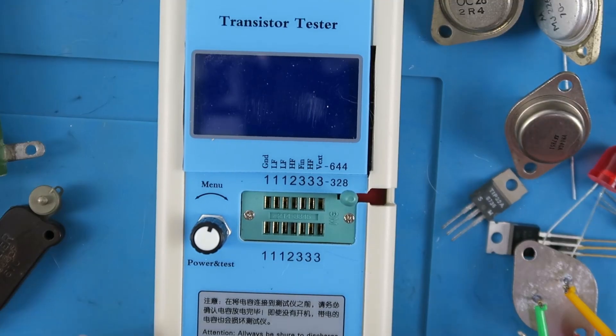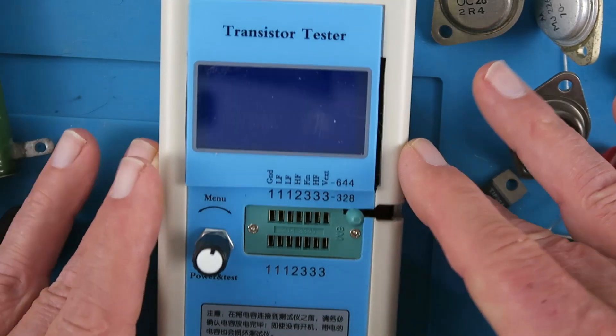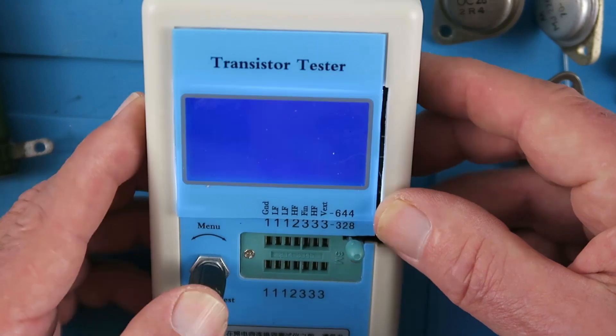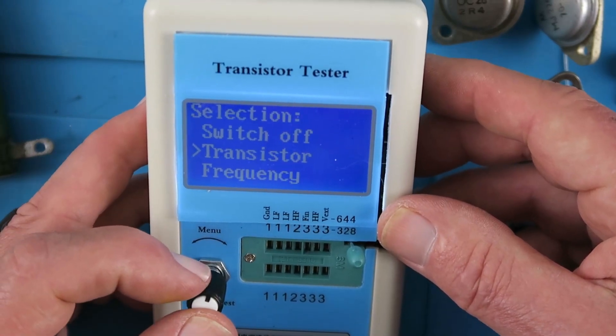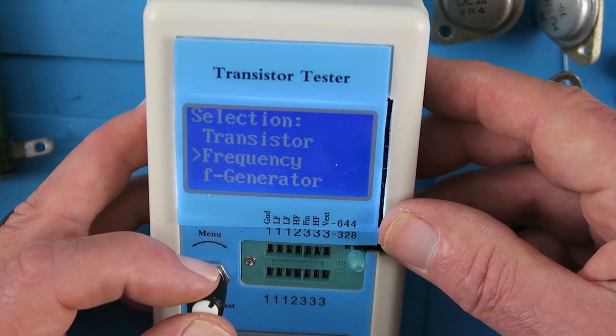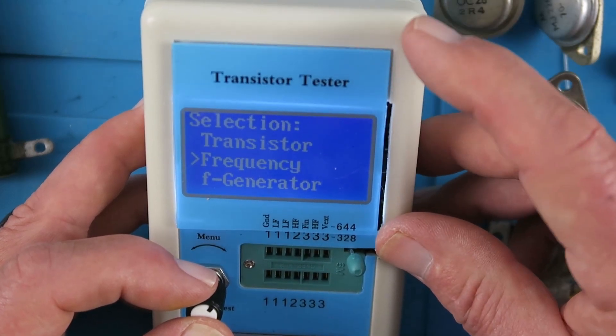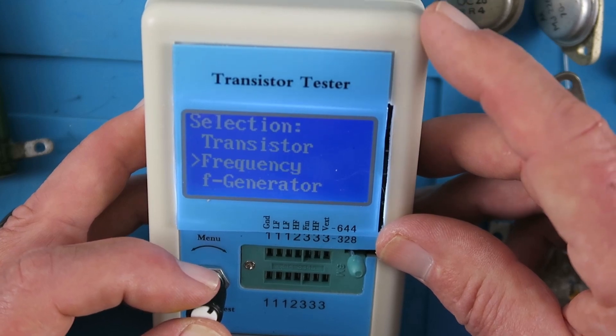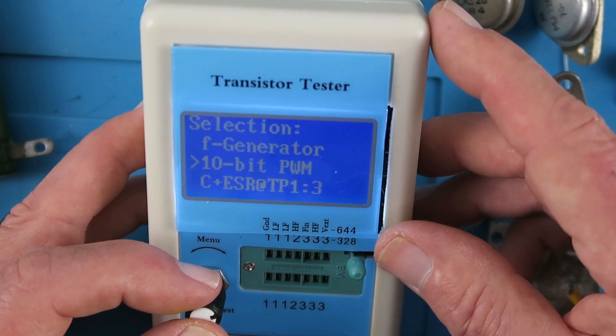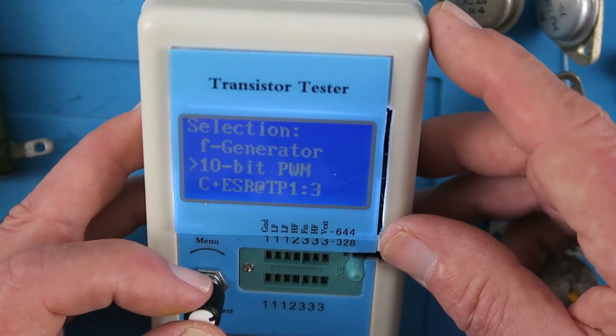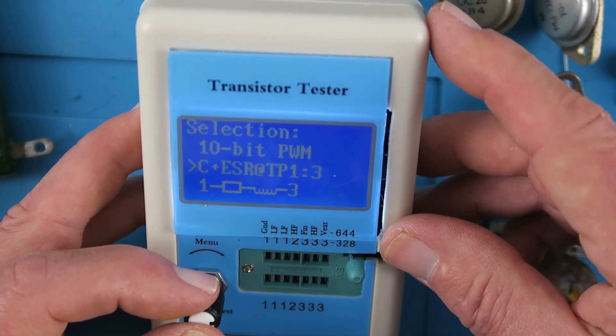As you can tell, I'm liking this little transistor tester, component tester. I like it a lot. There is even more to it. If we press and long hold the power button, we get to a menu where we can test the frequency. There is a port inside. I need to wire a connector for that, where you can measure frequency. It can also generate frequency.